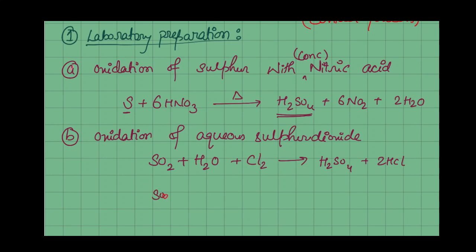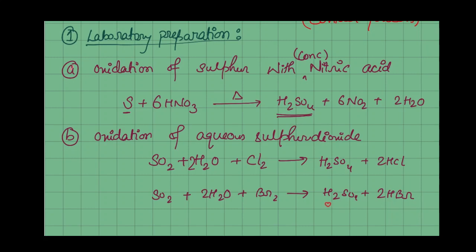Oxidation of sulfur dioxide can also be done with bromine: SO₂ + 2H₂O + Br₂ gives H₂SO₄ + 2HBr. This is our desired product — H₂SO₄.